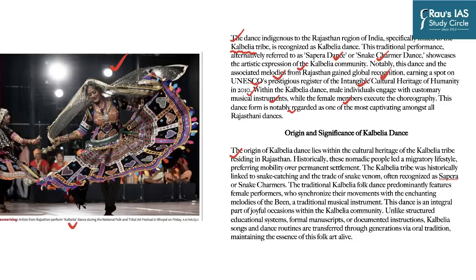Within the Kalbelia dance, male individuals engage with customary musical instruments while female members execute the choreography. The Kalbelia tribe historically led a nomadic, migratory lifestyle and was linked to snake catching and trade of snake venom — hence the name 'Sapera' or snake charmers. The traditional folk dance predominantly features female performers who synchronize their movements with the enchanting melodies of the been, a traditional musical instrument. Kalbelia songs and dance routines are transferred through generations via oral tradition — without formal manuscripts or documented instructions — keeping this folk art alive.